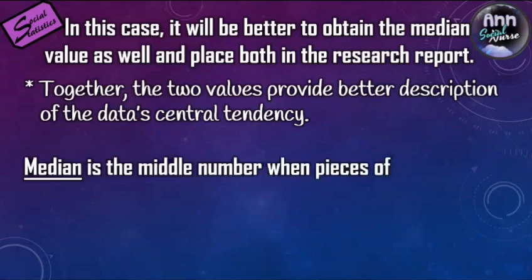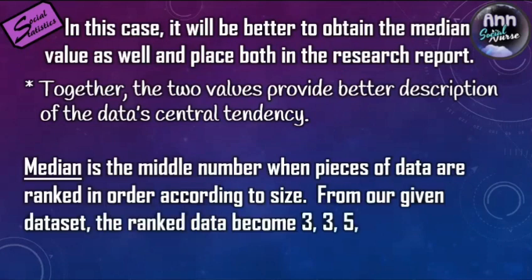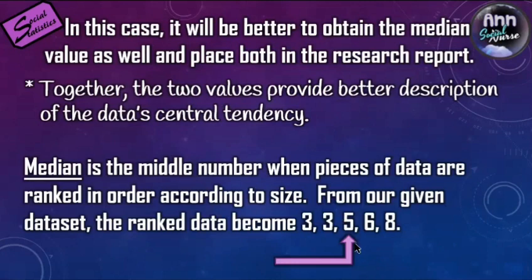The median is the middle number when pieces of data are ranked in order according to size. From our given data set, you arrange the data from smallest to highest and look for the middle piece of data. Because there are only five values, the middle data is 5. For your clan survey with 50 cases, you can still find it after arranging from lowest to highest. For hundreds of cases, Excel is very helpful. So that's the median.